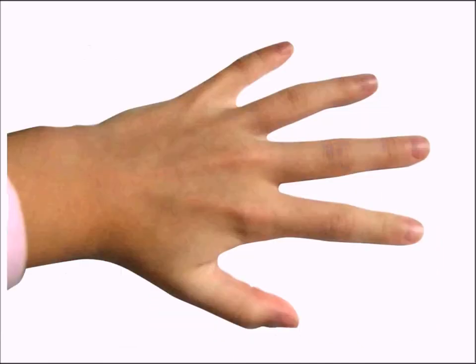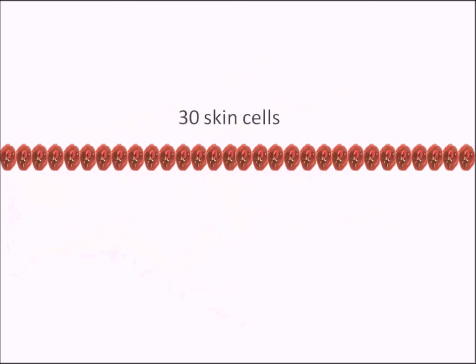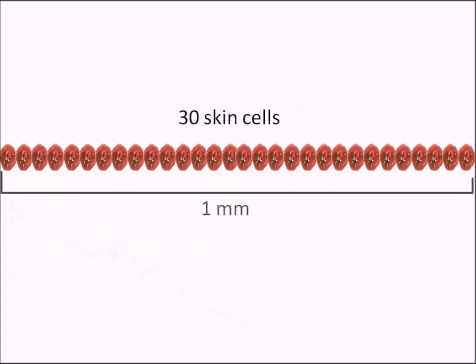Take some time and have a look at the back of your hand. Can you see the individual cells that make up your skin? Have a closer look. Well, it doesn't matter how close you look, you won't be able to see them — and that's because they're too small. So just how small are skin cells?